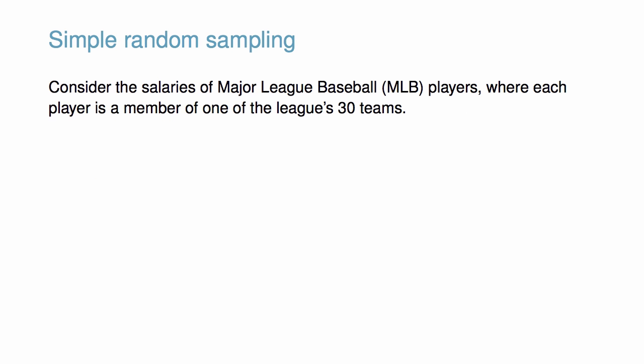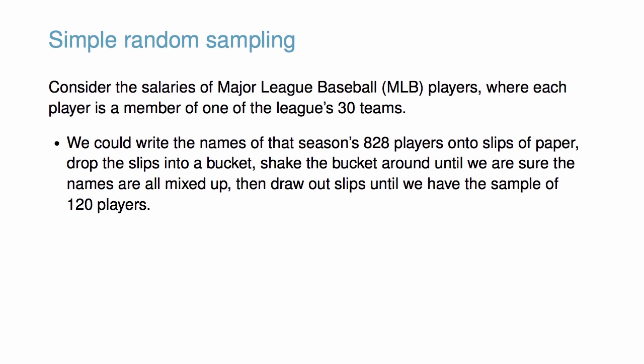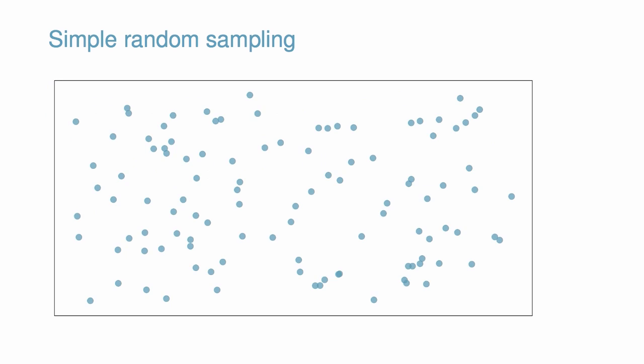The most basic type of sampling is simple random sampling. Consider the salaries of Major League Baseball players, where each player is a member of one of the league's 30 teams, and suppose we wish to estimate the average salary. We could write the names of that season's 828 players onto slips of paper, drop them into a bucket, shake it until the names are all mixed up, then draw out slips until we have a sample of 120 players. The figure illustrates simple random sampling, with blue dots representing individual players and bigger red dots representing those selected for the sample.